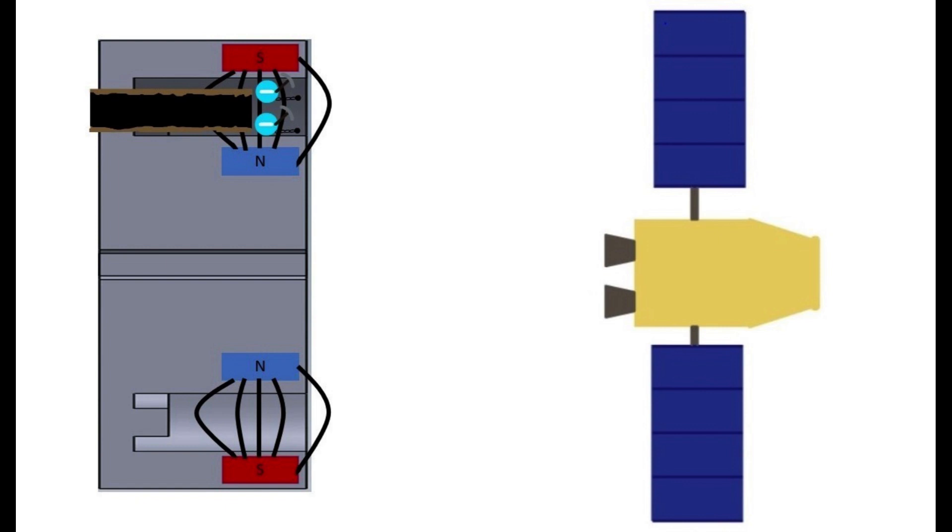The problem with anomalous transport, however, is that since Hall thrusters were invented over 60 years ago, nobody has been able to figure out a simplified model for anomalous transport based on the operating conditions of the thruster alone.